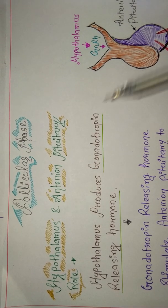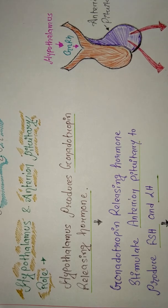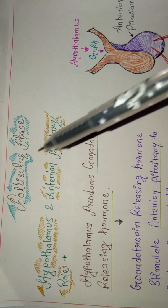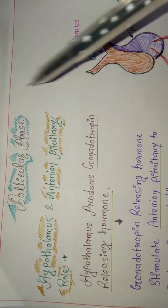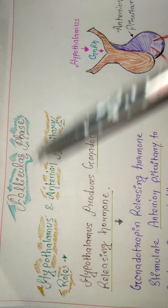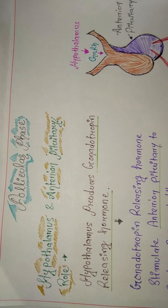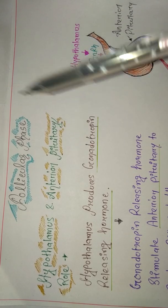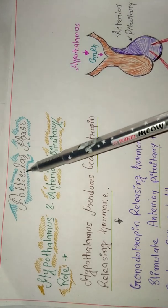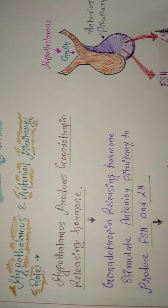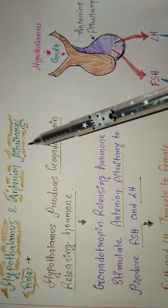Now let's study the follicular phase in detail. This phase is named after follicles, which are responsible for producing an egg. We need an egg from the mother and sperm from the father; they join to form a zygote. Eggs are produced by follicles in the ovaries, so the follicular phase is about how follicles and eggs mature.